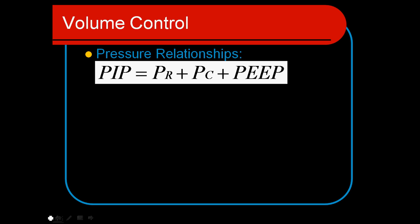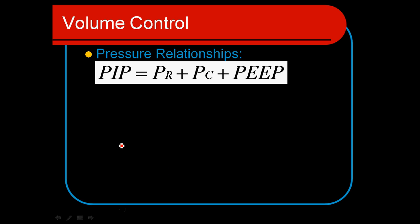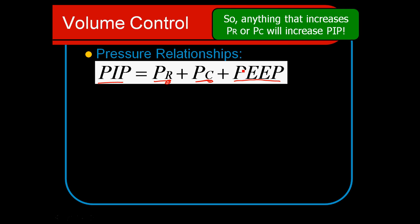These pressure relationships are very important for us in the mode of volume control because our PIP is what we see on the ventilator very often. But we have to make sure that we realize it's made up of multiple components. It's made up by the pressure due to the resistance and the pressure due to compliance, changes in patients' compliance, and the amount of PEEP that we have established on the ventilator. So that's what this equation is showing us.